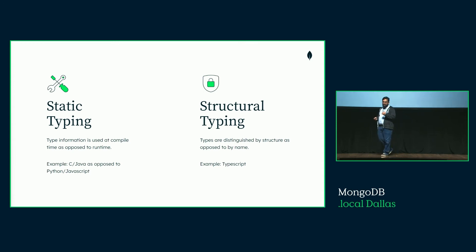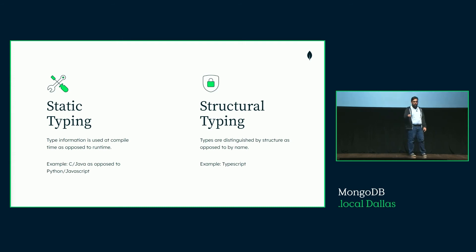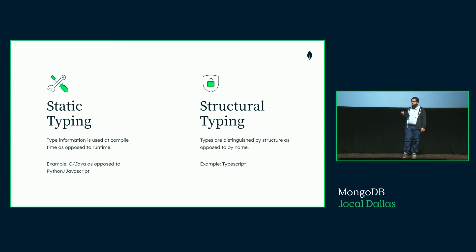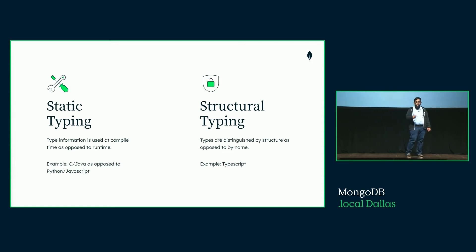A structural type system is a static type system that distinguishes data by its structure — for example, the fields it may contain — as opposed to the name it's given when declared. The most prevalent example of a structural type system in today's world is TypeScript. Most relational databases, despite being statically typed, don't have structural type systems because they only support scalars, not structured data types like documents and arrays. That's the reason why we ultimately lose the expressiveness when we have to do the conversion in the BI connectors today. Atlas SQL has a static structural type system, and in the next few slides we'll understand what this looks like in practice and why it's such a powerful combination.